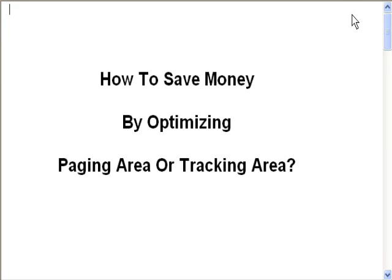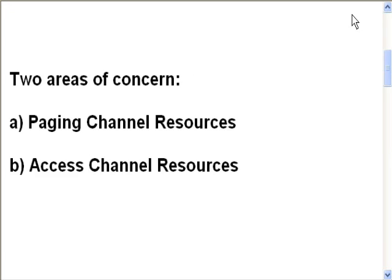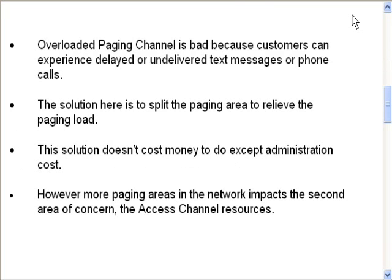Hello, here is an overview of how to save money by optimizing paging area or tracking area. There are two areas of concern: (a) the paging channel resources and (b) the access channel resources.